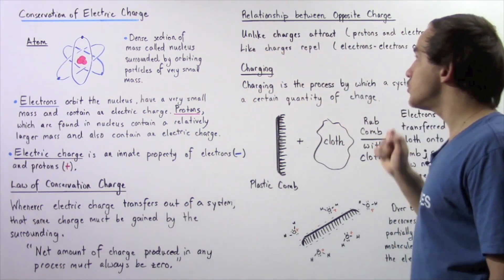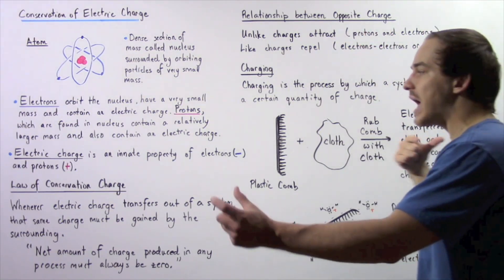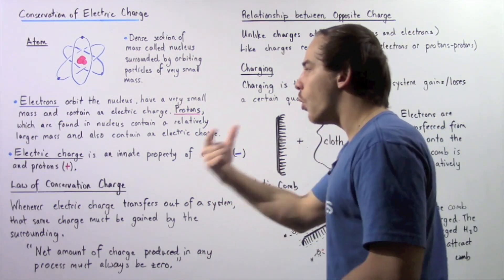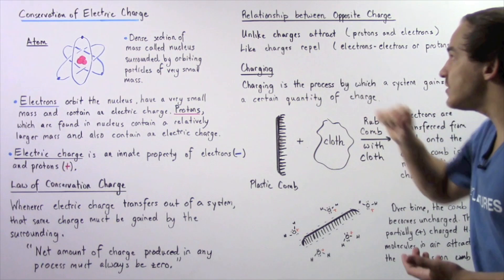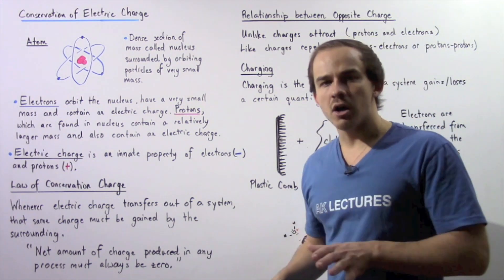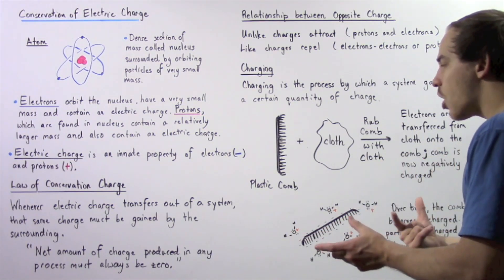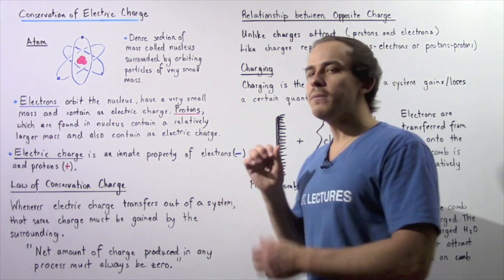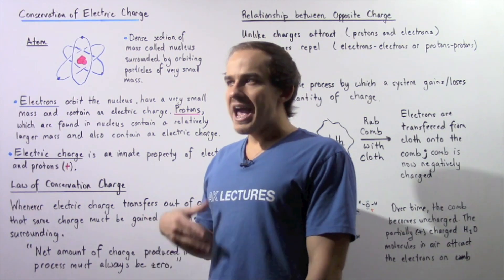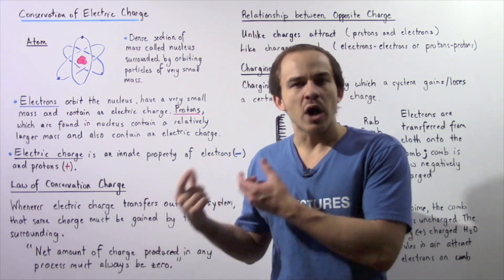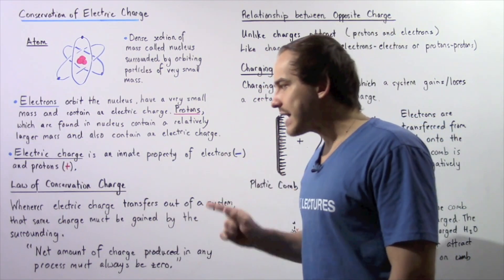Unlike charges attract and like charges repel. Protons and electrons will attract one another because one has a negative charge and the other has a positive charge, while like charges will always repel one another. Two protons or two electrons, which have equal and like charges, will always repel one another. We basically define electric charge as simply this characteristic or property of our subatomic particles, known as protons and electrons.